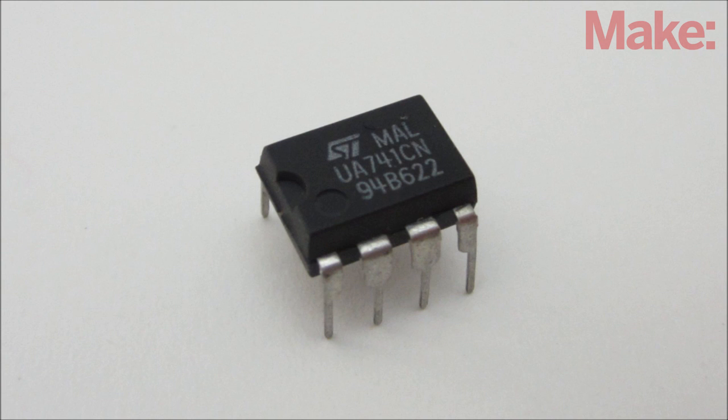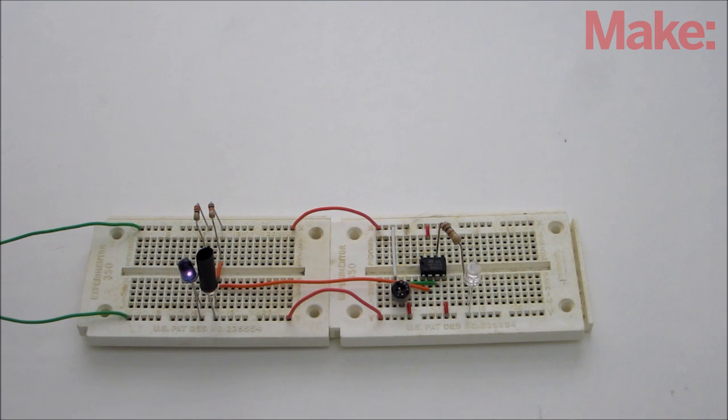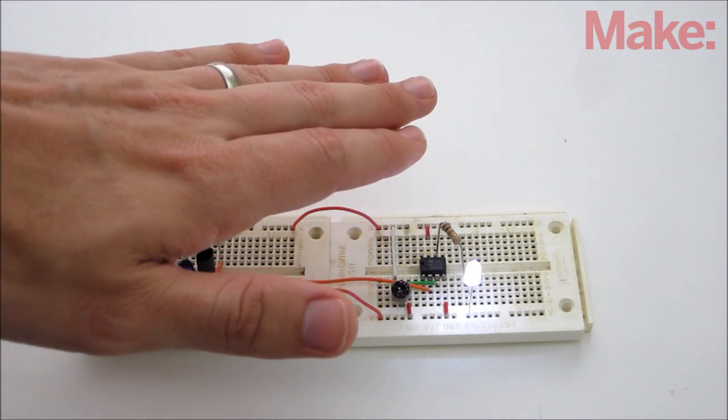If you don't have an Arduino you can also use an op amp to monitor the signal. Just connect the signal wire from the sensor to the inverting input of the op amp. Then connect the non-inverting input to the center pin of a variable resistor. This configuration acts like an adjustable comparator. When the signal drops below the reference voltage set by the variable resistor, the output will go high.